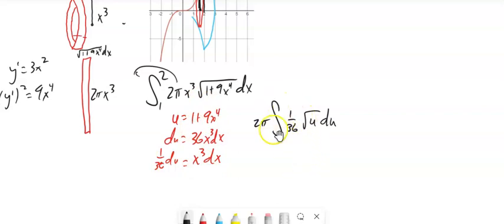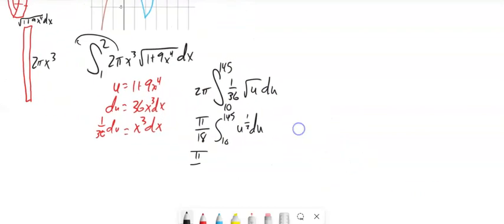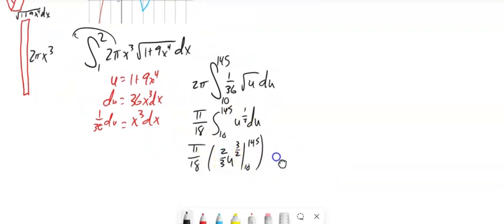I'm going to take the 2π out. And I've got 1/36th. The x³ dx is taken care of with du. So square root of u du. And I'm going to change these boundaries as well. When I plug 1 into u, I get 10. When I plug 2 into u, I get 145. I'm going to take this 1/36th out as well. So I've got π over 18. Take that 2/3 out. Multiply it by π over 18. So that would give me π over 27.